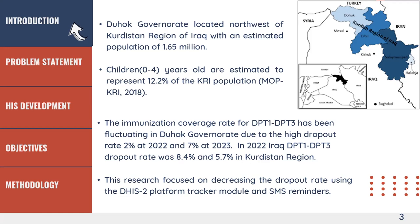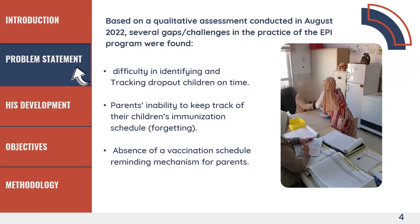These numbers, although below the accepted global dropout threshold of 10%, are not purely the result of routine immunization services — they also include extra outreach campaigns that have been conducted. So even with those extra outreach campaigns plus routine services, we still have a high dropout rate. This led me to conduct a baseline survey to understand more about the dropout issue.